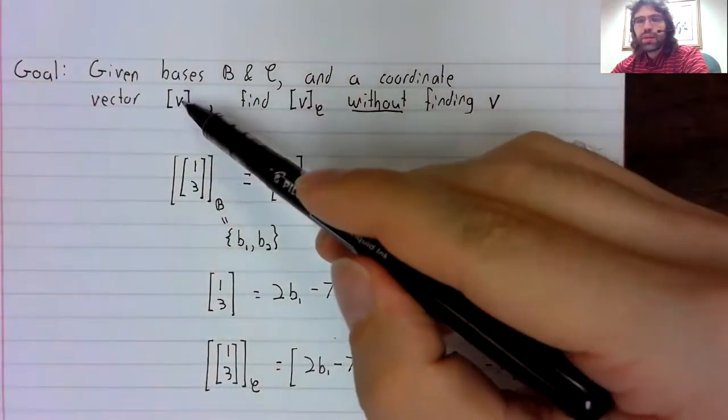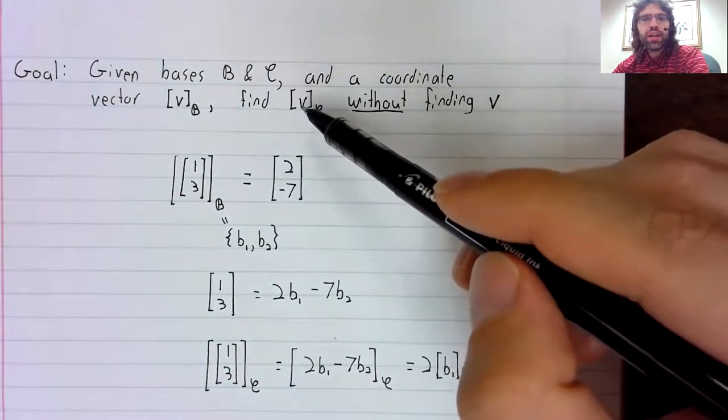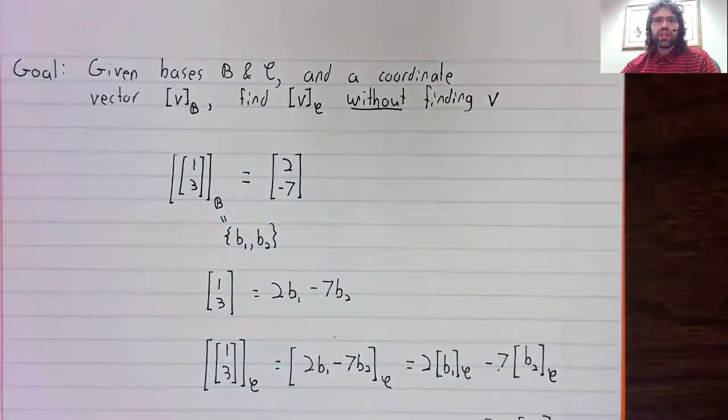So, going from here to here can be done via matrix multiplication. Let's nail that down as a theorem.